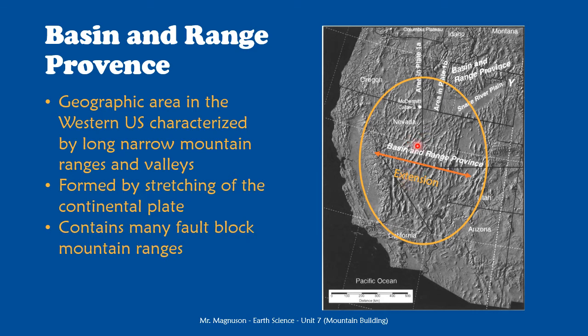All of these mountain ranges are fault block mountains, and there are some really high highs and some really low lows here. We have Mount Whitney — the tallest mountain in the lower 48 states — as part of this range, and just a couple valleys over, Death Valley, the lowest point in the continental United States, is also in this same Basin and Range area. So we have blocks of earth moving down and blocks moving up, forming these valleys and mountain ranges — and it is still happening.